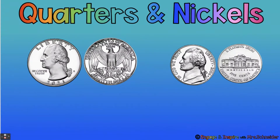Here is the front and back of a quarter, and here is the front and back of a nickel. Remember, the backs of quarters can also have different designs for different states. This is the older version of the back of the quarter. Every year students get confused between the quarter and the nickel, so let's remember a few things. This is George Washington, and this is Thomas Jefferson. On the back of the nickel is Thomas Jefferson's house, Monticello.